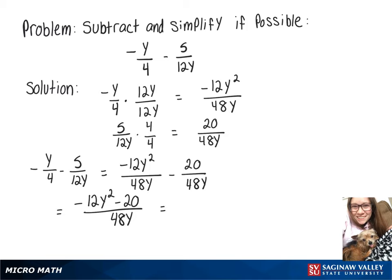And then on top I see we can factor out a 4. So we'll have 4 times negative 3y squared minus 5, and then the bottom we can split up into 4 times 12y. That can be written as 4 over 4 times negative 3y squared minus 5 over 12y.